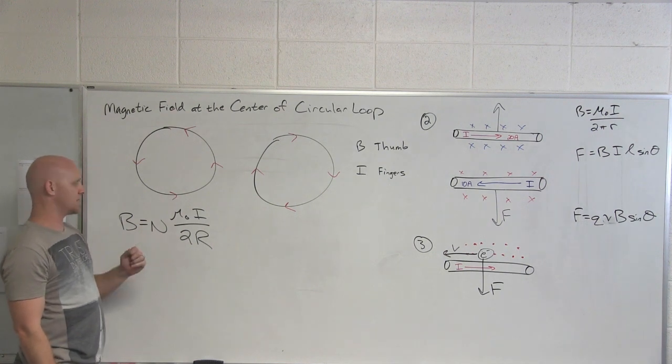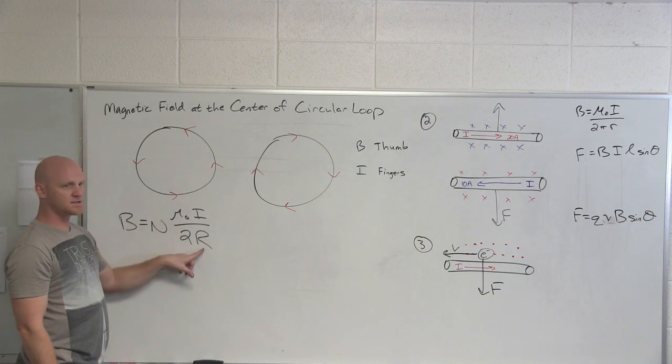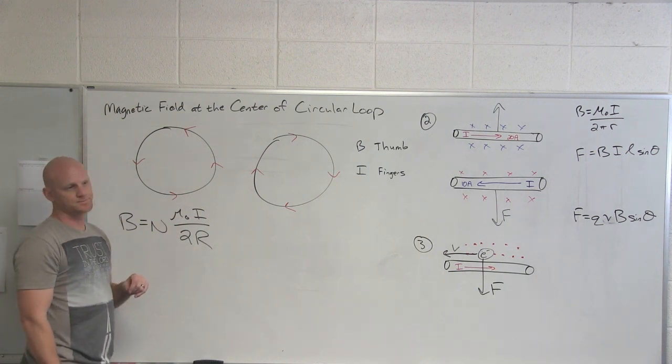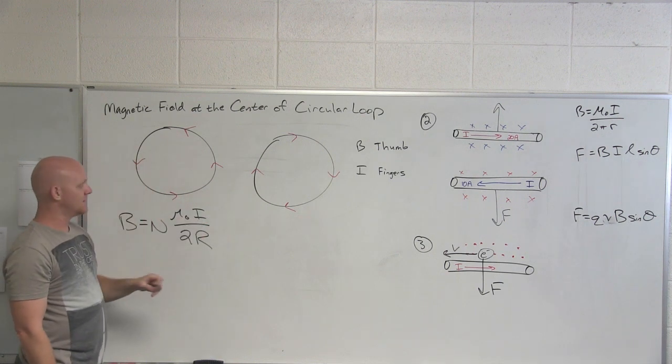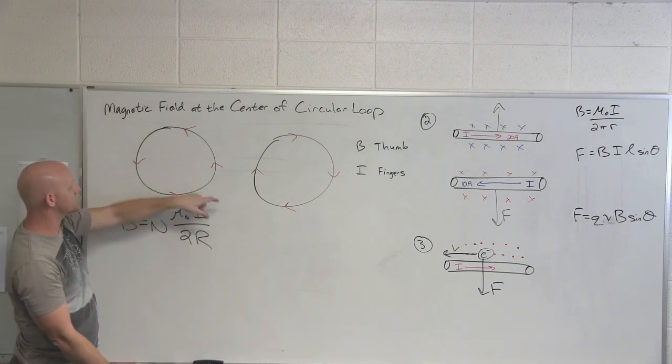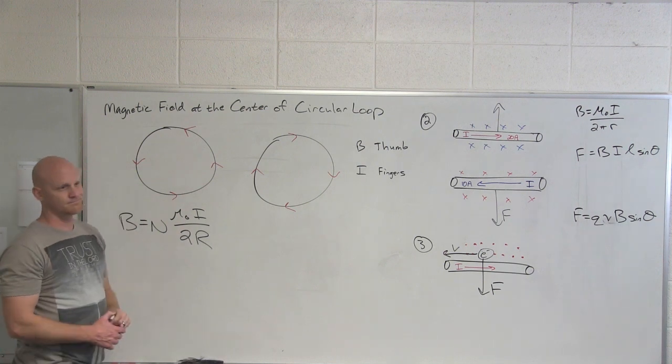So μ₀, your current, it's totally proportional there, and then the radius of your loop inversely proportional. It makes sense - the greater the current, the greater the magnetic field. But then also the bigger your loop, then the farther these wires are from the center and so it should be a smaller magnetic field at that center.